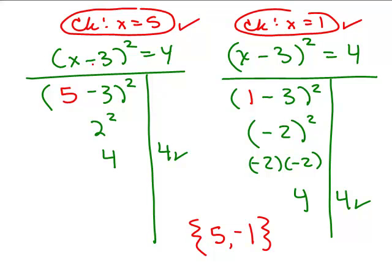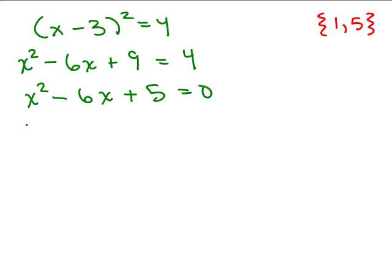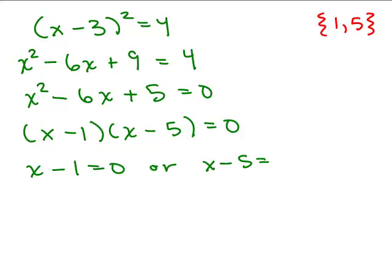Just to note, if you had expanded x minus 3 squared and solved by setting equal to 0, you'd get the same answer. Expanding gives x squared minus 6x plus 9 equals 4, then subtract 4 from both sides to get x squared minus 6x plus 5 equals 0. Factoring gives x minus 1 times x minus 5 equals 0, so x equals 1 or x equals 5 — exactly the same solutions. For the next problem, factoring won't work, so we must use the square root property.